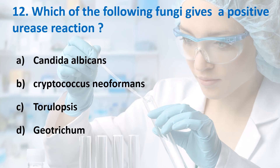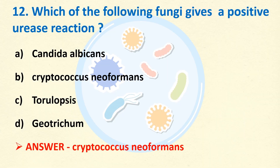Twelfth question: Which of the following fungi gives a positive urease reaction? Options: Candida albicans, Cryptococcus neoformans, Torulopsis, Geotrichum. Answer is Option B, Cryptococcus neoformans. Other fungi which show urease positivity include Malassezia furfur, Trichophyton mentagrophytes, Trichosporon beigelii, Cryptococcus, and Rhodotorula.